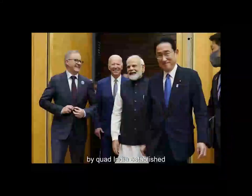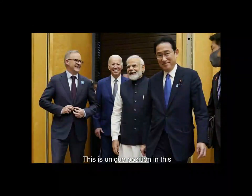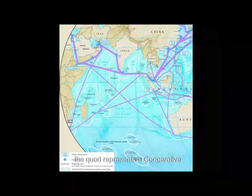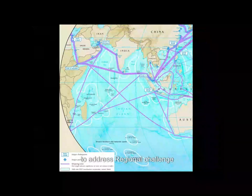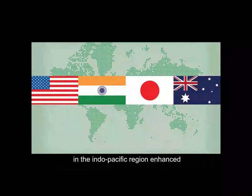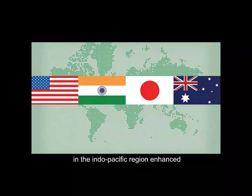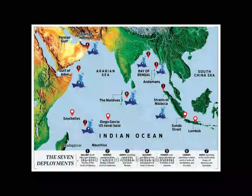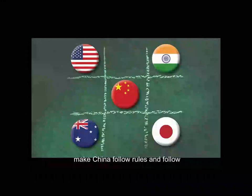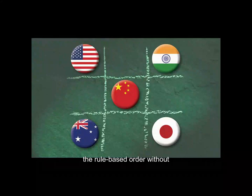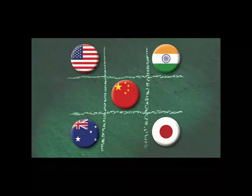Through Quad, India has established its unique position in this multipolar world. In conclusion, the Quad represents a cooperative effort amongst democratic nations to address regional challenges in the Indo-Pacific, enhance security, and foster stability, with India playing a pivotal role. Its objective is to make China follow rules and adhere to a rules-based order, without fighting China militarily.